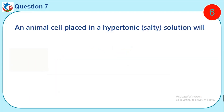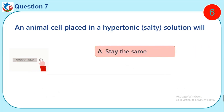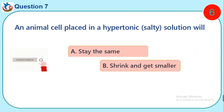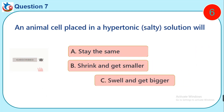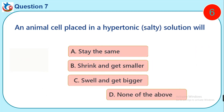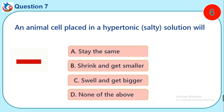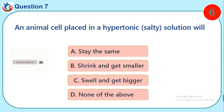Question 7. An animal cell placed in a hypertonic or salty solution would: A. Stay the same. B. Shrink and get smaller. C. Swirl and get bigger. D. None of the above.